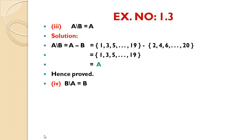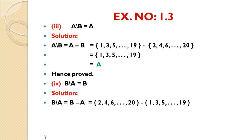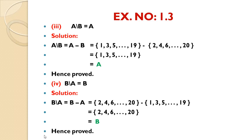Fourth part — B - A = B: Solution: B - A means we write set B elements, difference sign, then set A elements. B - A is the set of all elements of set B which are not elements of set A. Those elements are 2, 4, 6, ..., 20, which is exactly set B. Hence proved.